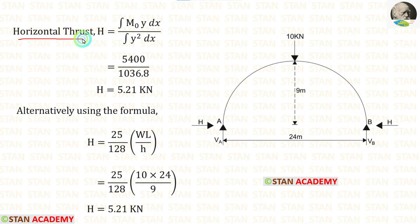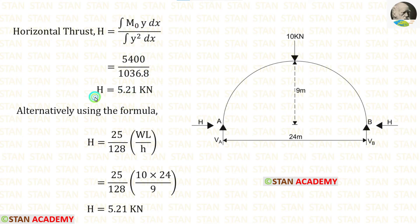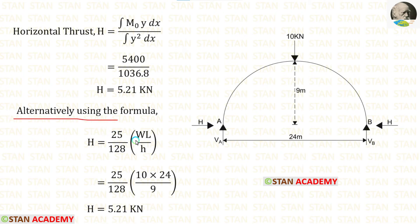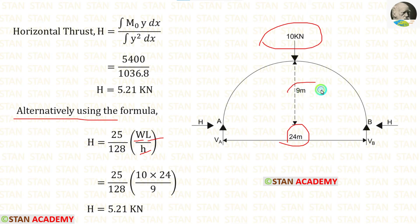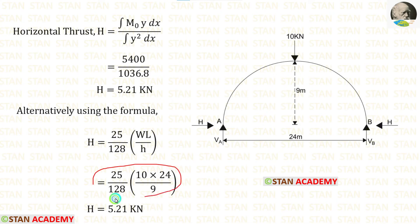We have now calculated both the numerator and denominator of the horizontal thrust formula. Applying the values, H = 5400 / 1036.8, giving H = 5.21 kN. Alternatively, using the direct formula with W = 10, L = 24, and rise h = 9, we also get H = 5.21 kN.